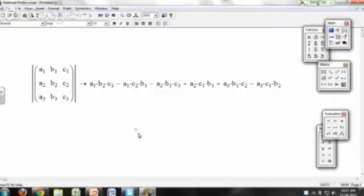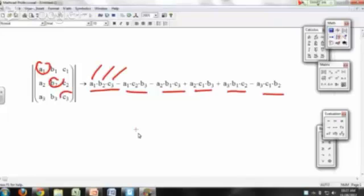So 1, 2, 3, 4, 5, 6, 6 terms. So electron 1 is in spin orbital A, electron 2 is in spin orbital B, electron 3 is in spin orbital C.